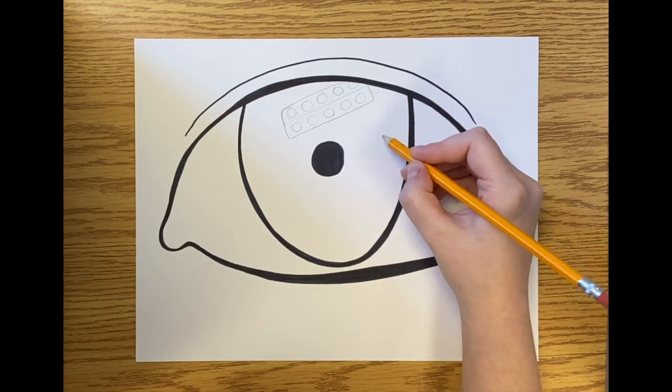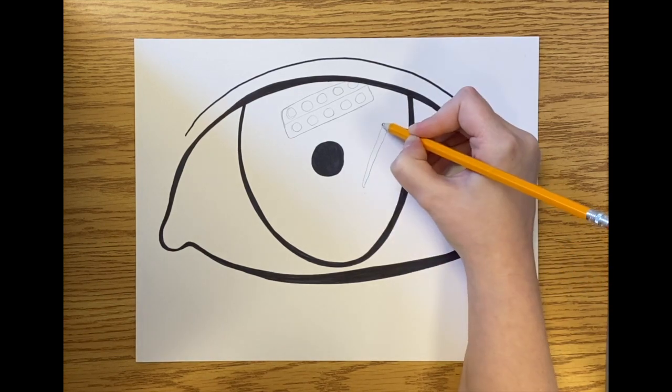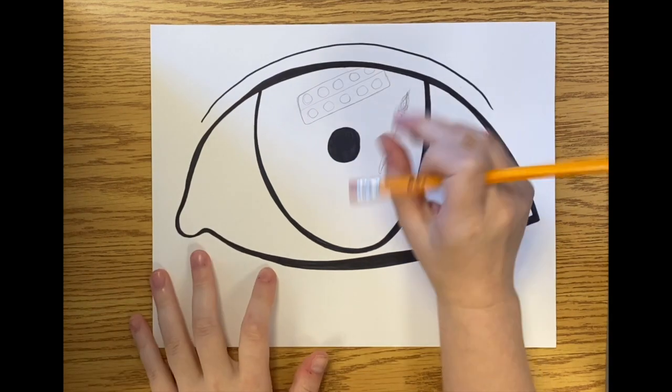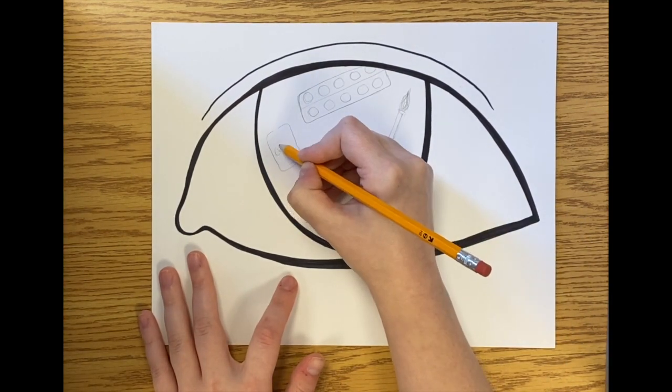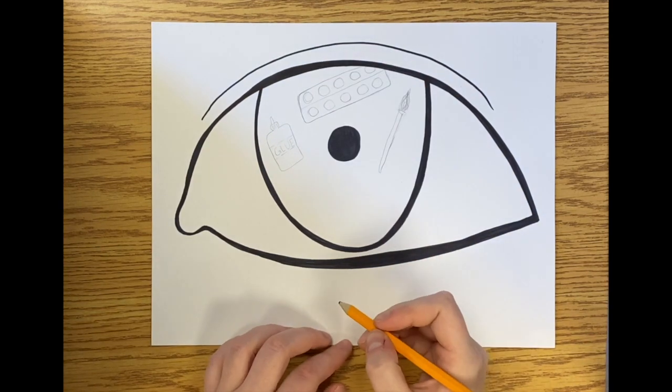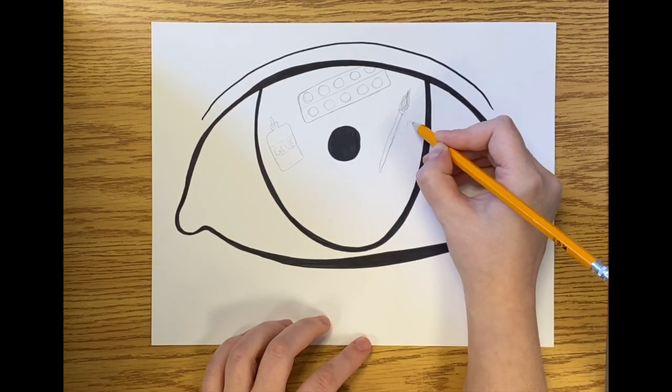Here I've sped up a clip of me drawing the rest of the art supplies in my iris. I chose to do a lot of art materials that are smaller and fill up the iris shape that way, but you can draw one big thing in the middle of your iris as well.